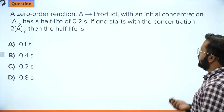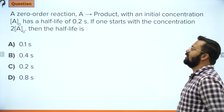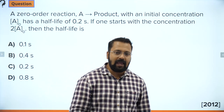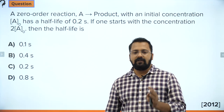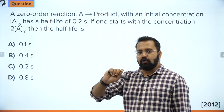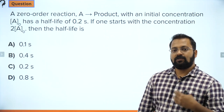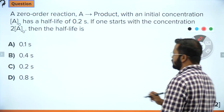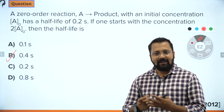A zero order reaction with initial concentration a₀ = 0.2 has a half-life of 0.2 seconds. If the initial concentration is changed to 2a₀, since t-half is directly proportional to a in zero order reactions, the half-life doubles to 0.4 seconds.